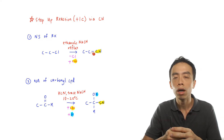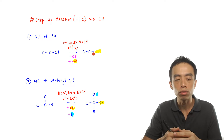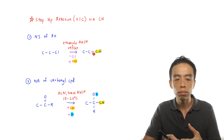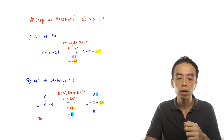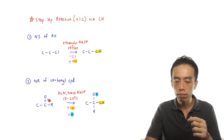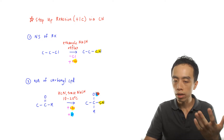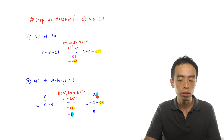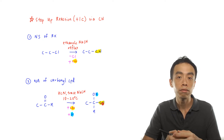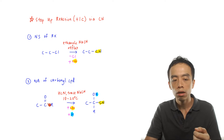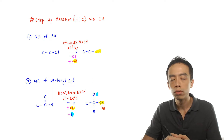You substitute this one functional group to get a product that also has only one functional group — so this is a replacement of functional group. Whereas for nucleophilic addition of carbonyl compound, you start off with this carbon having one oxygen, and when you look at the product, this carbon will retain this oxygen, and on top of that, it adds on another functional group.